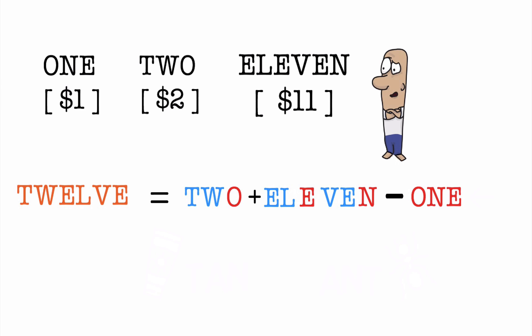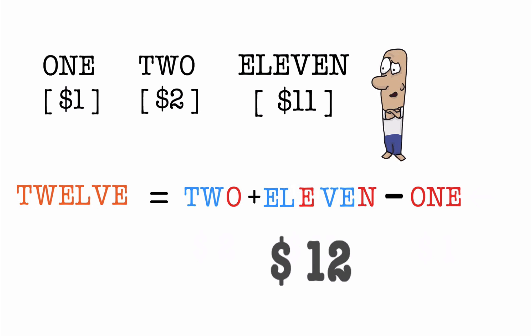And since we know the cost of the words TWO, ELEVEN, and ONE, we can say the value of TWELVE is 2 plus 11 minus 1, which gives us 12. But I am sure that many of you have already figured out this answer, perhaps intuitively. That is why many find this problem so easy.